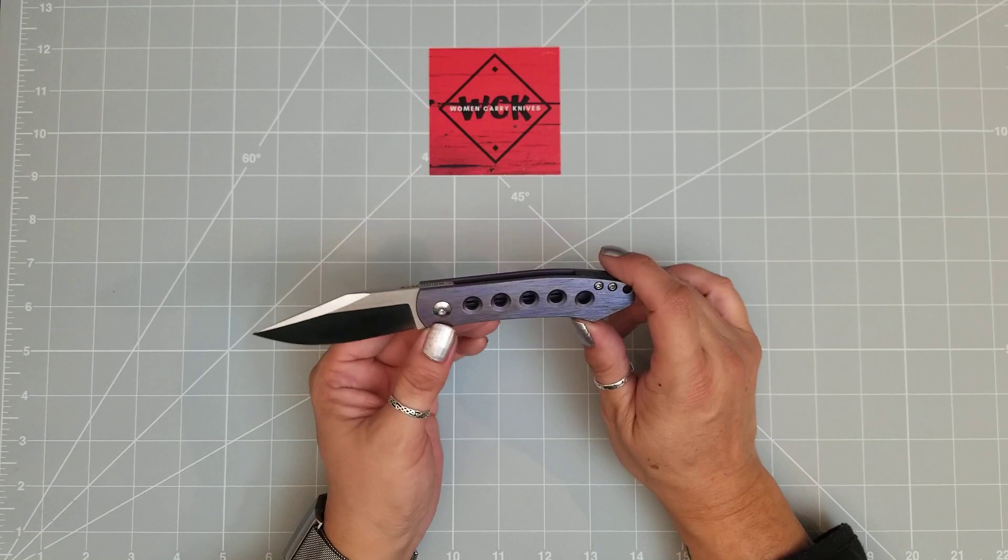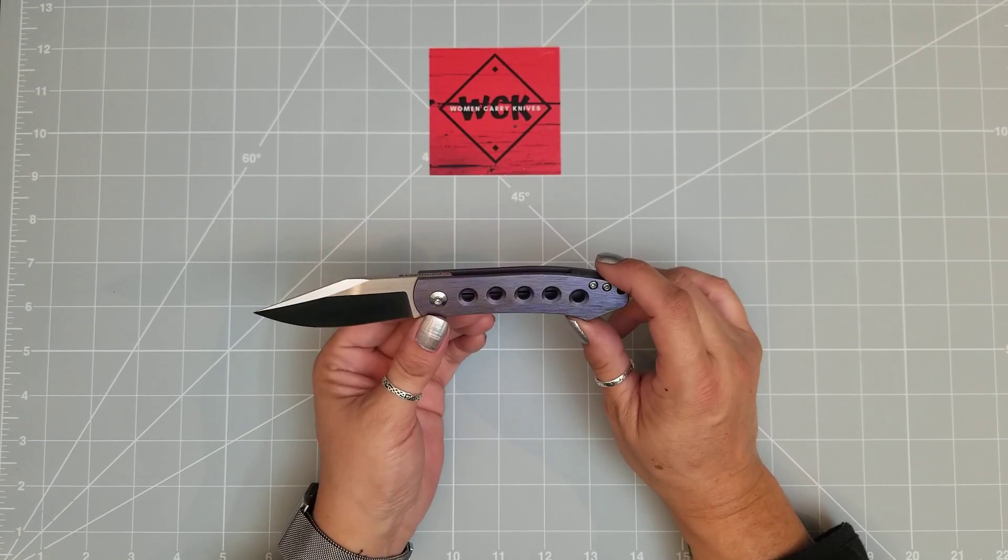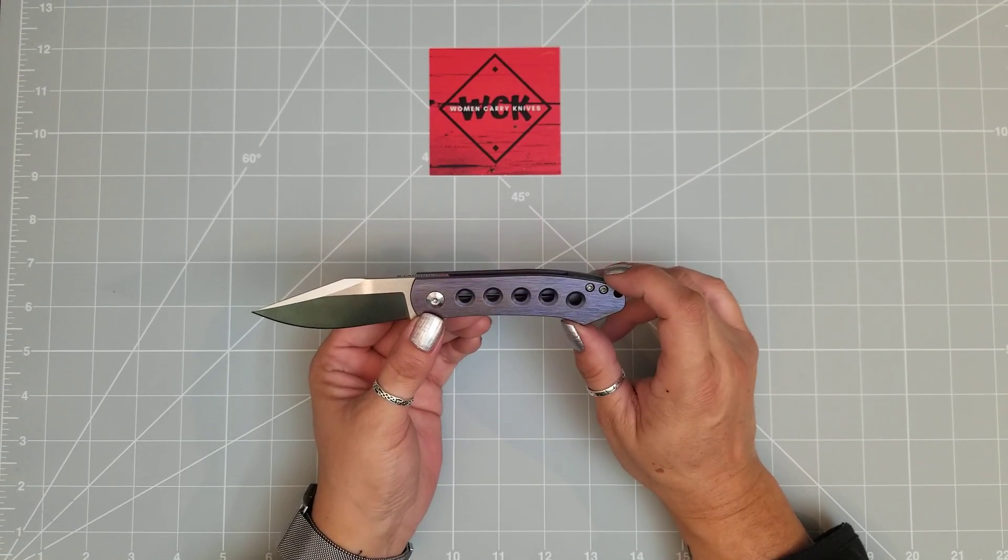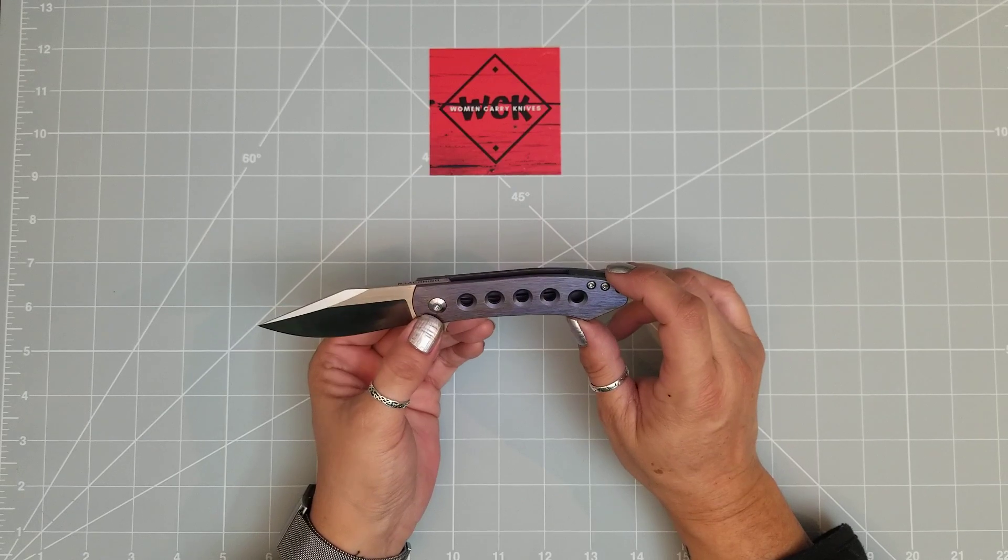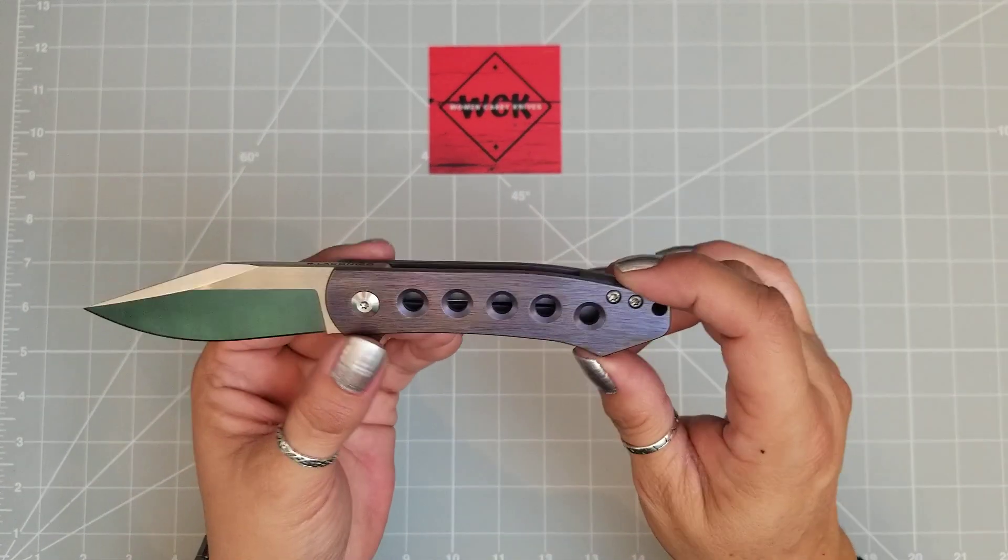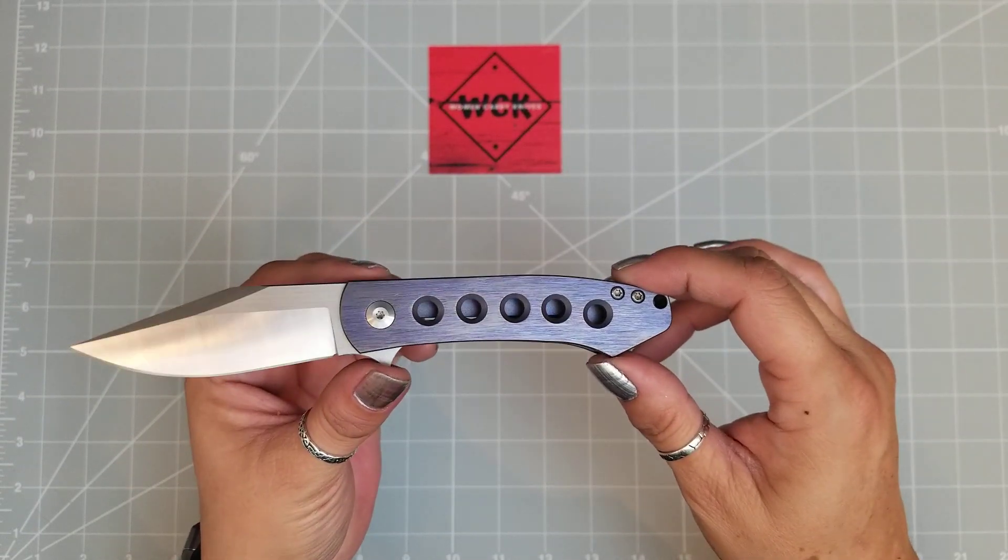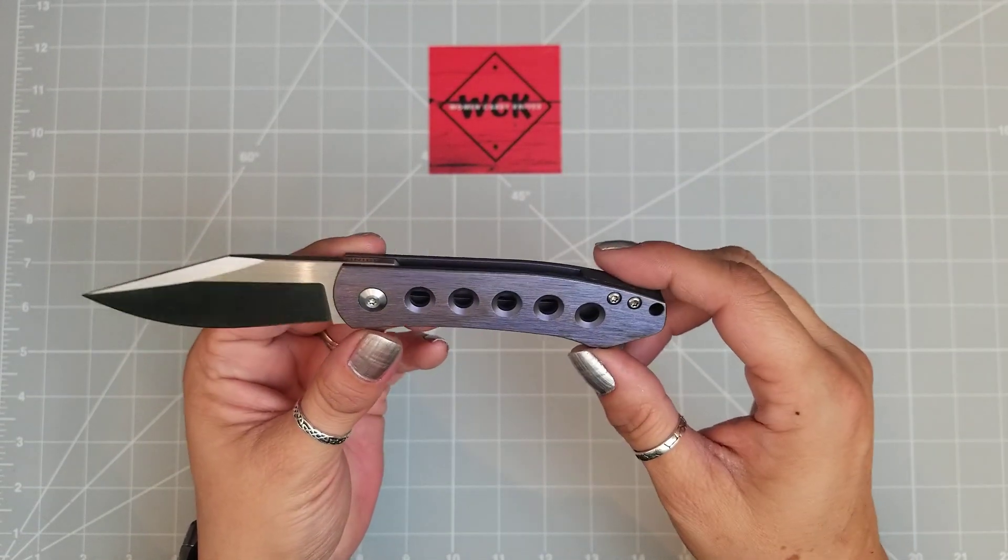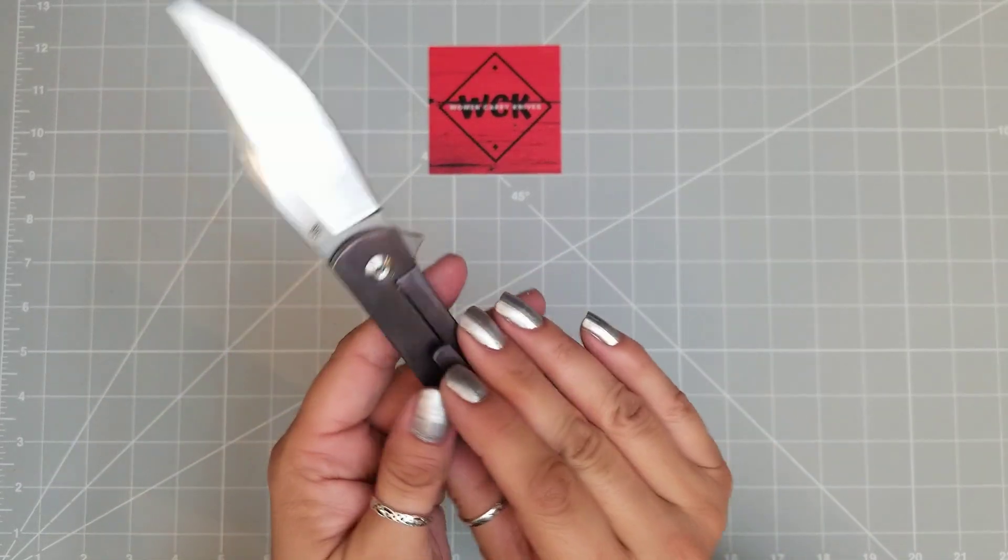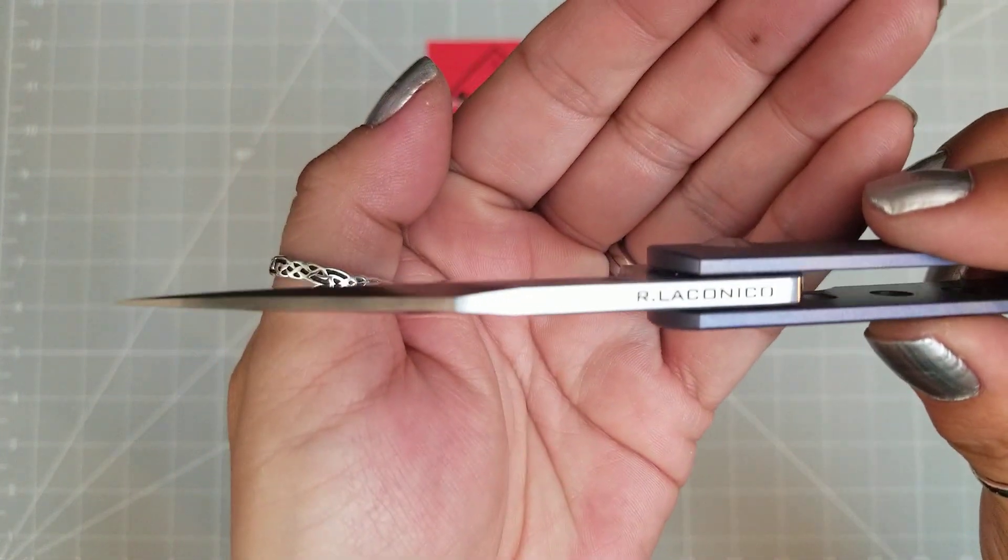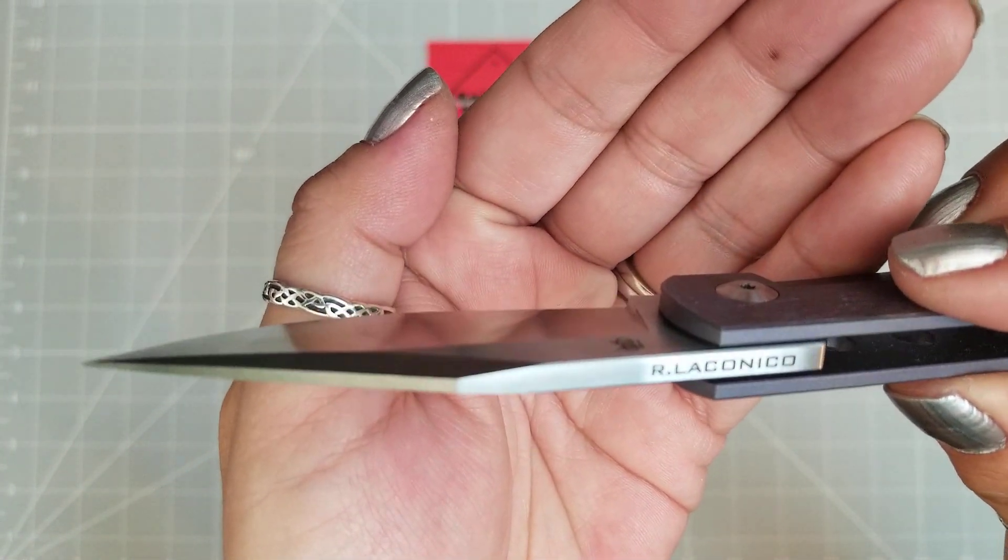But then I went to Blade Show and I found this in this beautiful brushed purple-blue anodization. And it was the only one there, and I said, yep, that is going to be mine. So again, this is the Ray Laconico Min Pin.